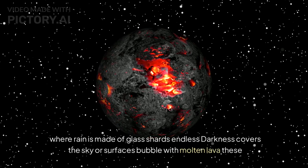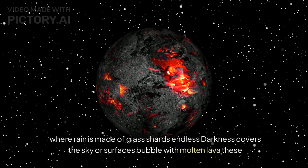Where rain is made of glass shards, endless darkness covers the sky, or surfaces bubble with molten lava.